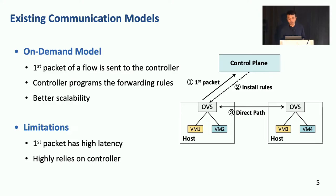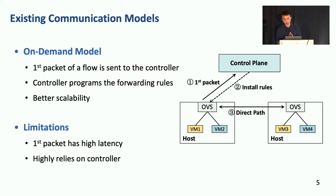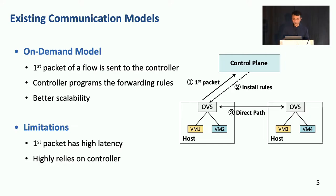Another model is the on-demand model. The first packet of a flow is sent to the controller, which then programs the forwarding rules. It scales better than the pre-programmed model. However, the first packet suffers from extremely high latency, and the whole system highly depends on the controller and is sensitive to control plane outage.